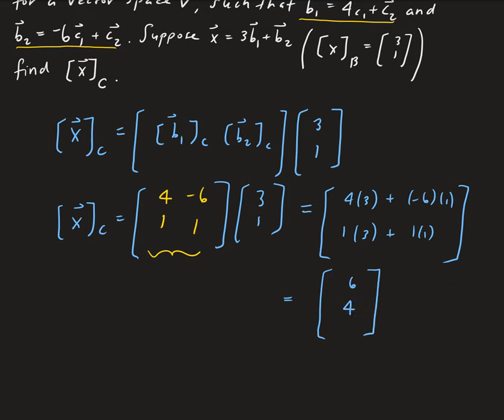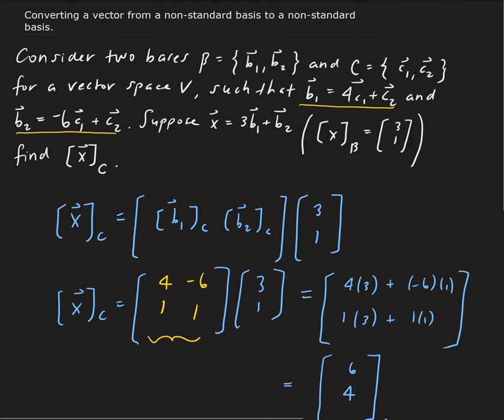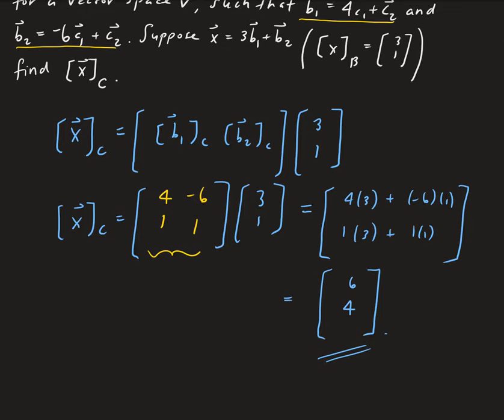So that is the, that is our solution. So that is the vector in, vector of, in our C basis. So again, so that's going from the basis B to C. And that's the equivalent vector.